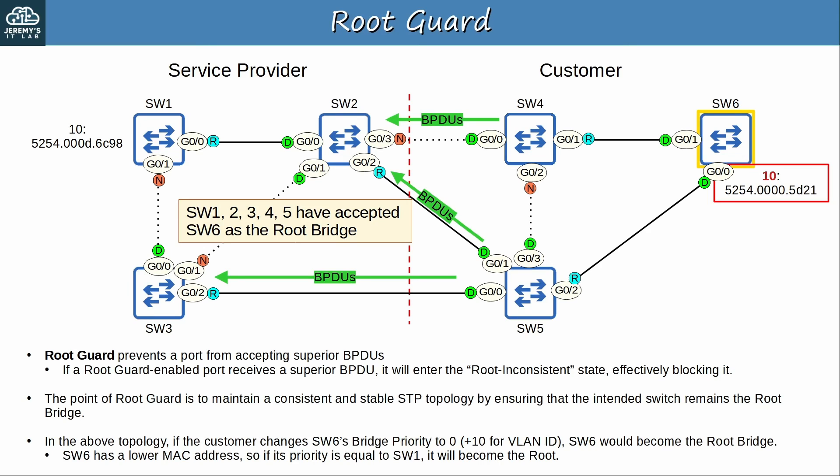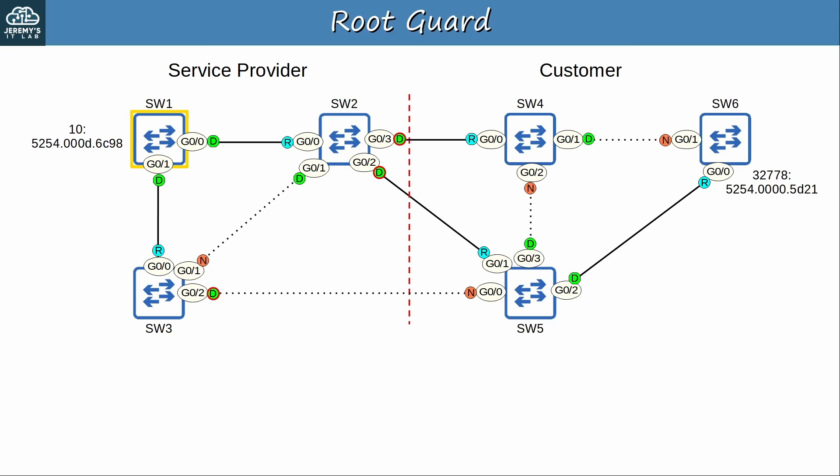From the service provider's perspective, this is not a good situation. You don't want a customer's devices messing with the STP topology. Now we've returned the topology to the original state, with SW1 as the root bridge. Let's try the same thing again, but this time with RootGuard enabled.